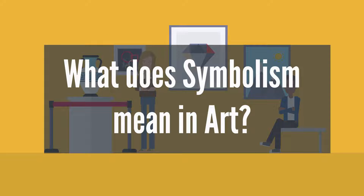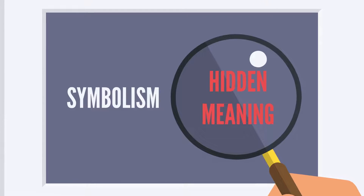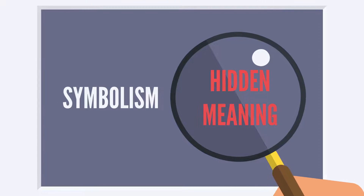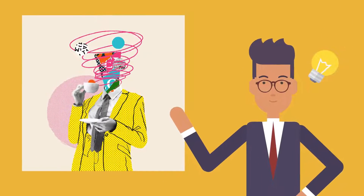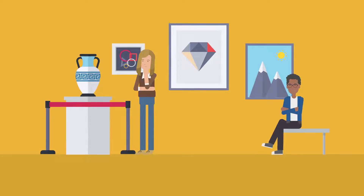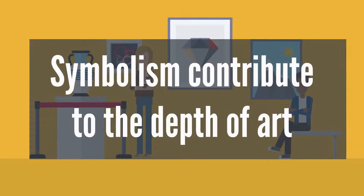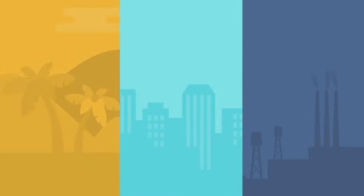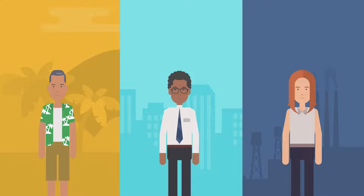What does symbolism mean in art? The purpose of symbolism is to communicate the hidden meaning to the viewer, reader, or listener. It represents abstract ideas and tells us about artistic expression. Symbolism is one of the most important elements that contribute to the depth of art. It can be the color of the painting or the depiction of characters that are significant to some specific themes.